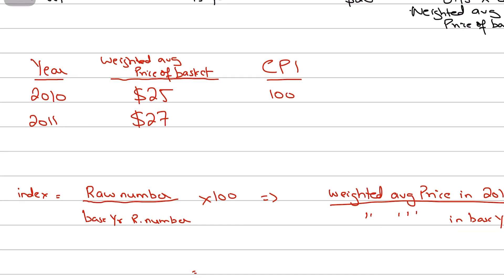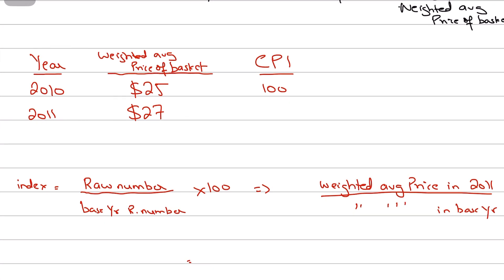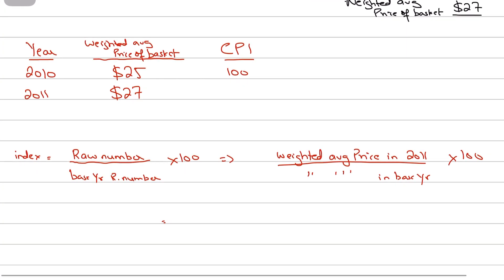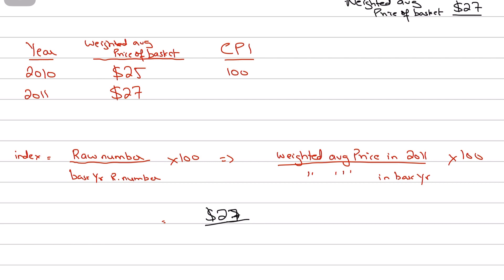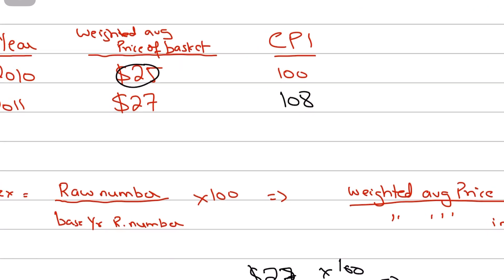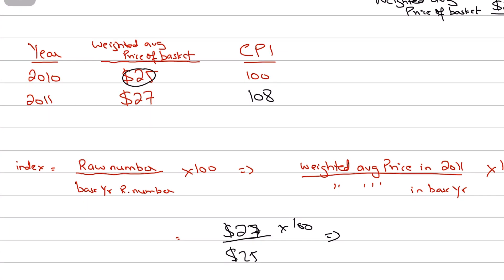To calculate the CPI for 2011: the weighted average price in 2011 is $27, divided by the base year weighted average price of $25, times 100. That gives 27 ÷ 25 × 100 = 108. So the CPI in 2010 was 100 and in 2011 it was 108.